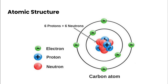An atom has a nucleus. The nucleus is made up of protons — shown here in blue — and neutrons, shown in red. Protons and neutrons are two types of subatomic particles. Protons have a positive charge, which is why they've got the plus symbol on them. Neutrons are neutral, so they have no charge.